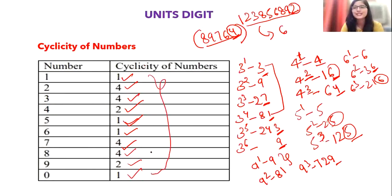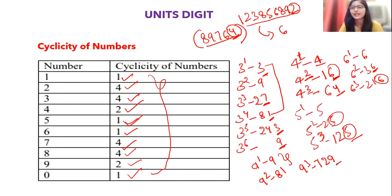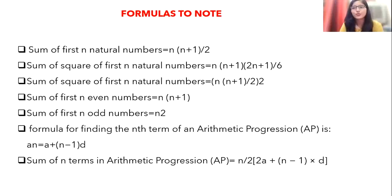Now you understand where these cyclicity values come from — no need for rote memorization. Just remember: 2, 3, 5, 7 — actually 2, 3, 7, 8 have cyclicity of 4, and the rest you can quickly determine using the approach explained. That covers the cyclicity topic.